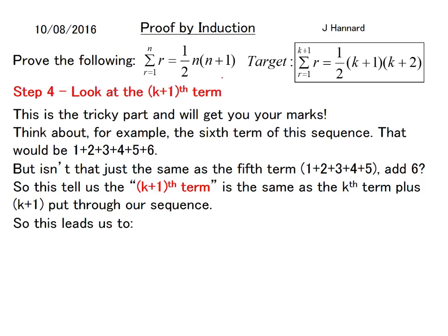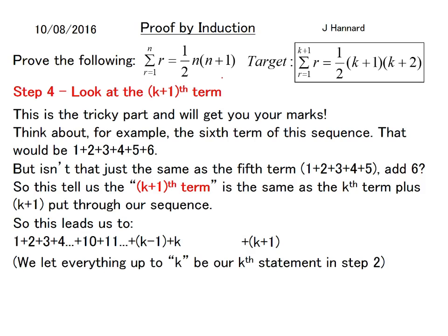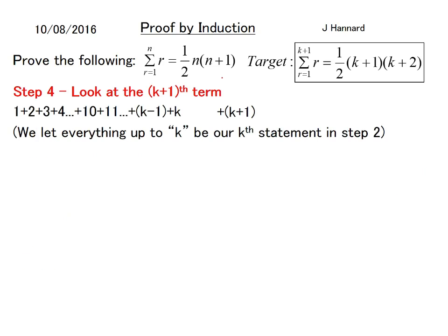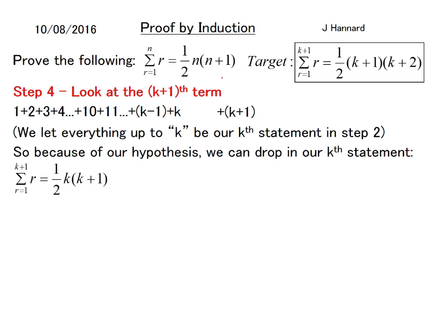This tells us that the k plus 1's term is the same as the kth term plus k plus 1 put through the sequence. So this leads us to the kth statement, which is that, plus a k plus 1. So we let everything up to k be our kth statement because obviously that's everything up to k. Because of our hypothesis we can drop in the kth statement, and there it is there. But remember we have to add on the k plus 1.